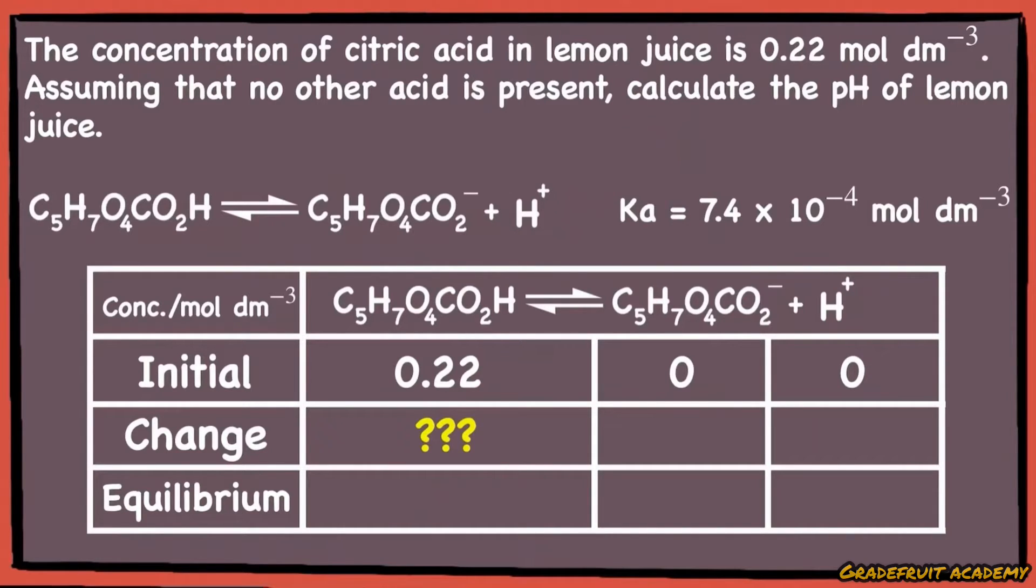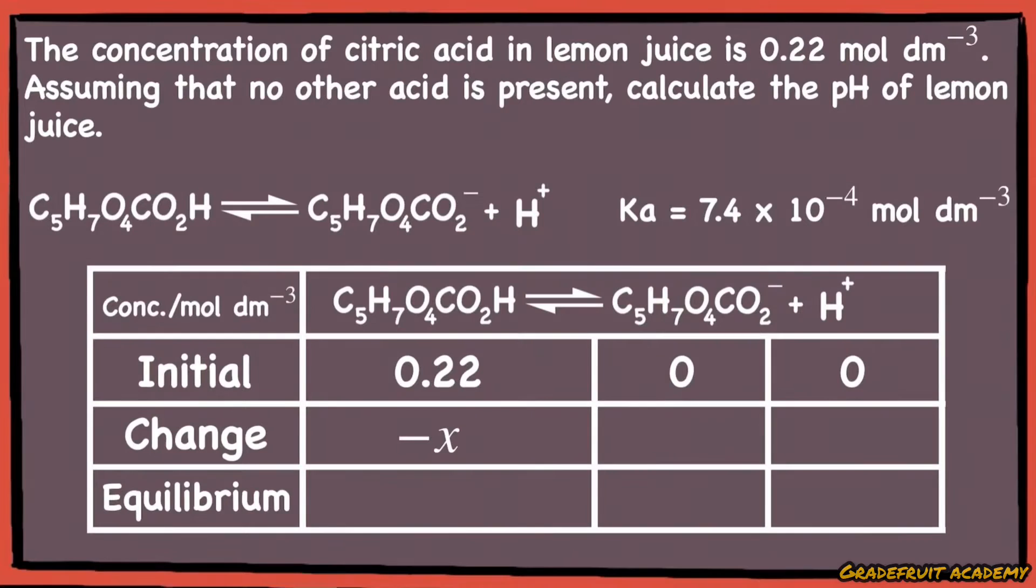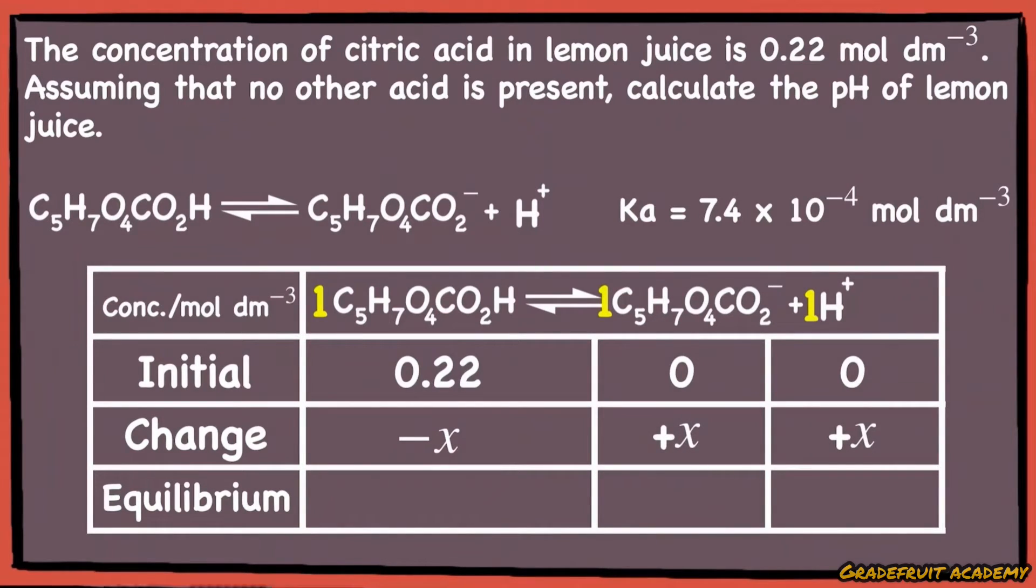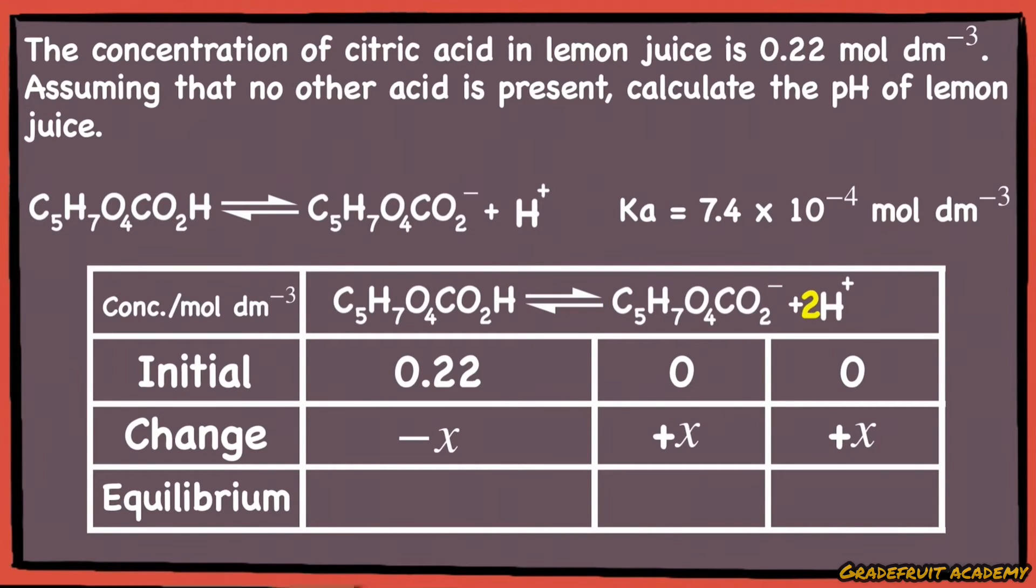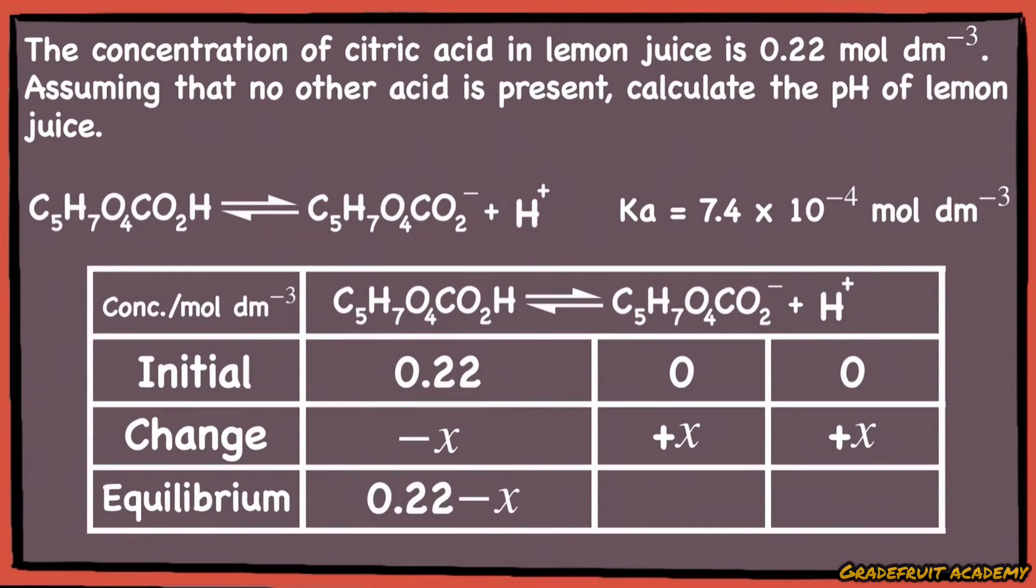Now comes the question: how do we know the exact concentration of the acid molecule that's ionized? Since it's not stated in the question, we can let it be an unknown, minus x. Since one mole of citric acid ionizes to form one mole of its conjugate base and one mole of hydrogen ions, we can write plus x for these two blanks. Take note that if two moles of hydrogen ions are produced instead, we would write 2x accordingly.